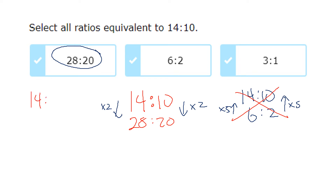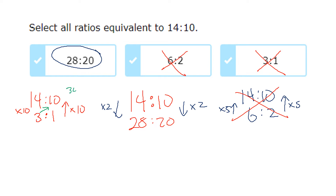For 14 to 10 and 3 to 1 — I can't tell what 3 is multiplied by to get 14. I know 1 is multiplied by 10, but 3 times 10 is 30, not 14, so they're not equivalent. Cross multiplying confirms: 3 times 10 is 30 and 1 times 14 is 14 — not equal. For 6 to 2: 6 times 10 is 60 and 2 times 14 is 28 — also not equivalent.